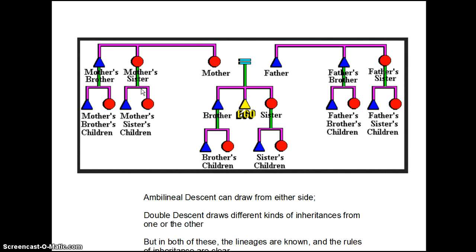Your book talks about a few other versions. Ambilineal descent is when you can draw from either side, but ego does at some point have to choose — will I belong to the matrilineage or the patrilineage, or sometimes it's decided for them. In double descent, different kinds of inheritances go from one side to the other. In both ambilineal and double descent, even though you can get things from both or either sides, they are still considered unilineal descent because the lineages are known and the rules that determine what is inherited are still entirely clear.